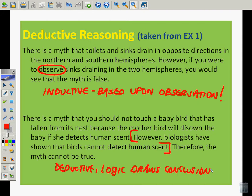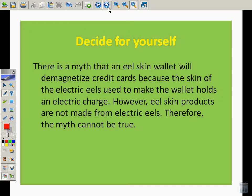I'm using logic to draw my conclusion because it's scientific fact. Here's one that you can try on your own. See if you can pause it right here and see if you can figure out what exactly is going on in this one. Is it inductive or deductive? There's a myth that an eel skin wallet will demagnetize credit cards because the skin of the electric eels used to make the wallet holds an electric charge. However, eel skin products are not made from electric eels. Therefore, the myth cannot be true. Once again, I don't see the word observe. However, I need to understand the distinction. Am I testing this? Am I seeing if this is true? Did I make an eel skin wallet? No, I didn't make an eel skin wallet and test to see if this is true. I'm saying it's not made from eel skin of electric eels, so it must not be able to be true. And so this is deductive. This is deductive reasoning because we deduced that it couldn't possibly demagnetize the credit cards because there's no electric eel skin used. That's the distinction that we're making.